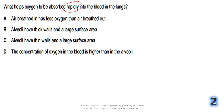Option A says air breathed in has less oxygen than air breathed out — wrong, inspired air has 21% and expired has 16%. Option B says alveoli have thick walls and large surface area — large surface area is correct, but thick walls would mean oxygen takes a long time to reach the blood, so that is wrong.